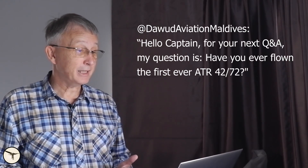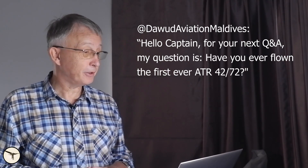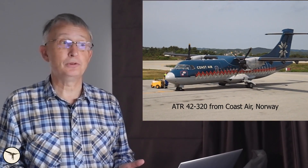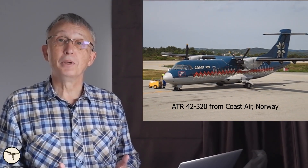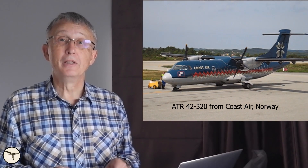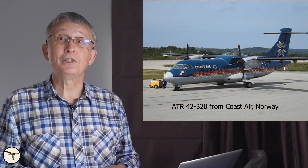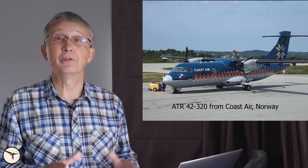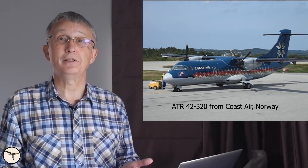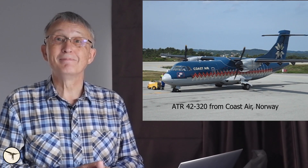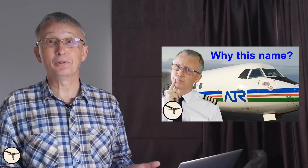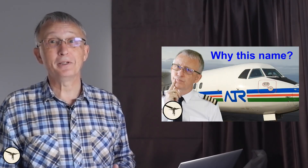Question 6: Have you ever flown the first ever ATR 42? Not the very first — the very first ATR to fly was the 42-200, and that was only two prototypes. I have flown the 42-300 and the 42-320, which were the first production models. The only difference between them is 100 horsepower more in the 320. And why is it called 300 or 200 — where is the 100? I have a video about that as well, so you'll find the link below.